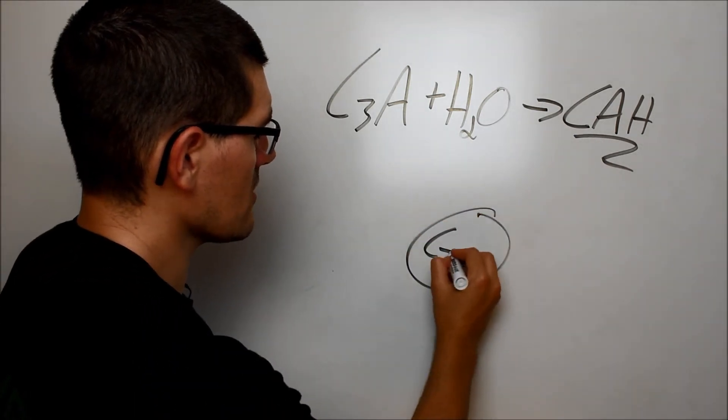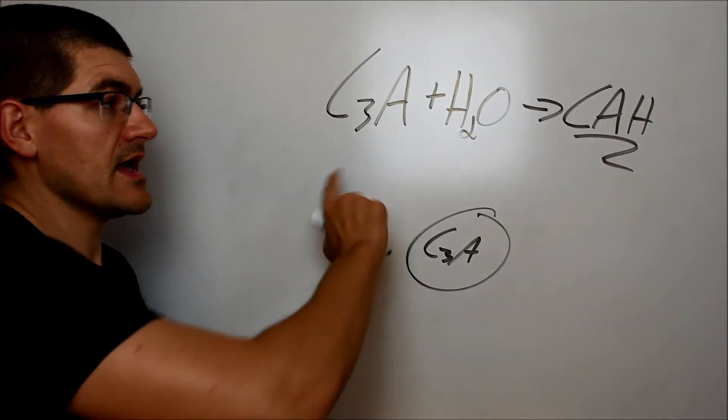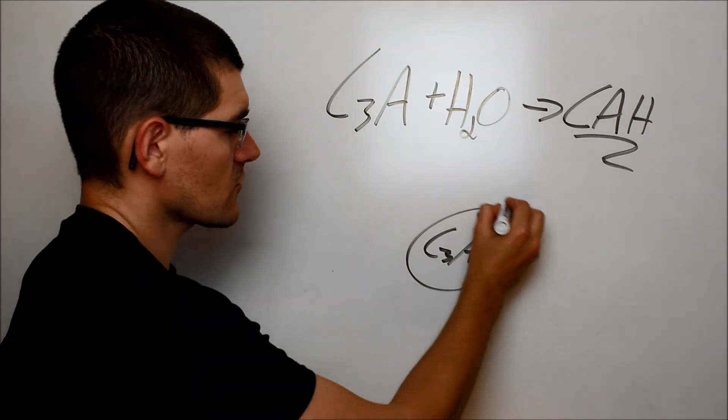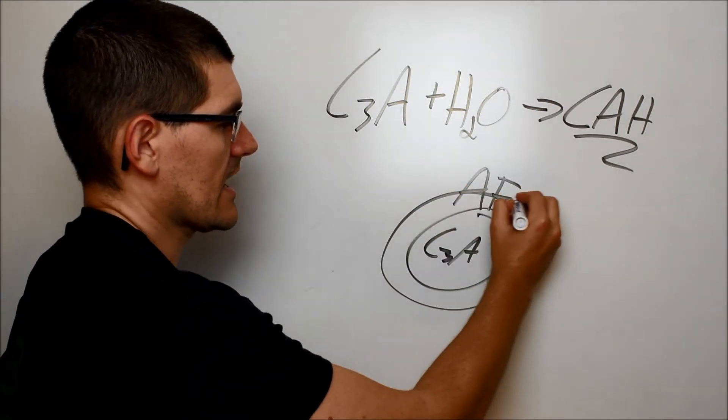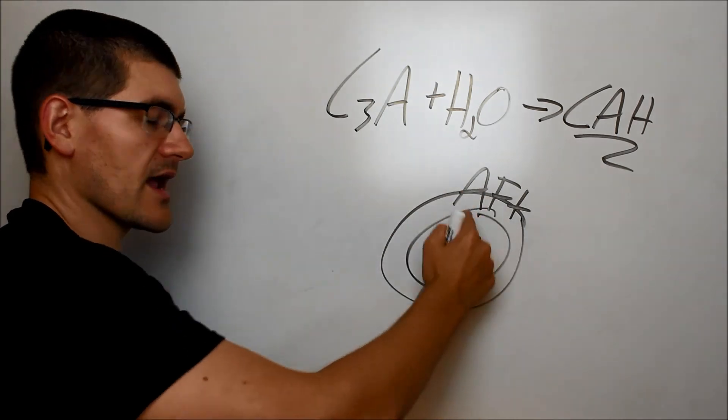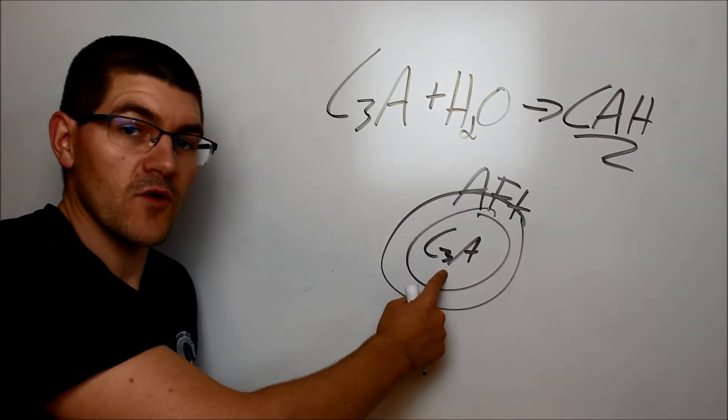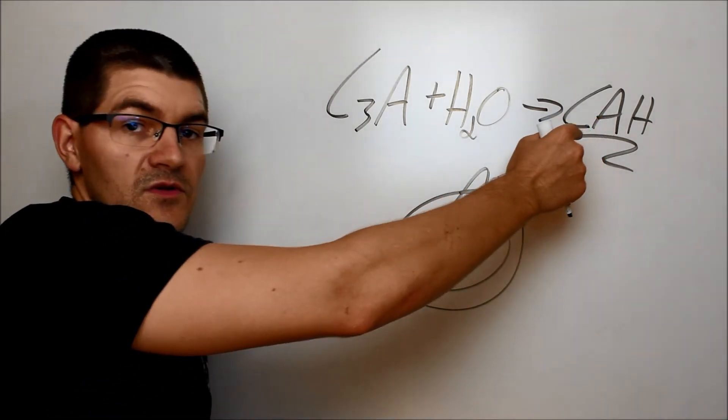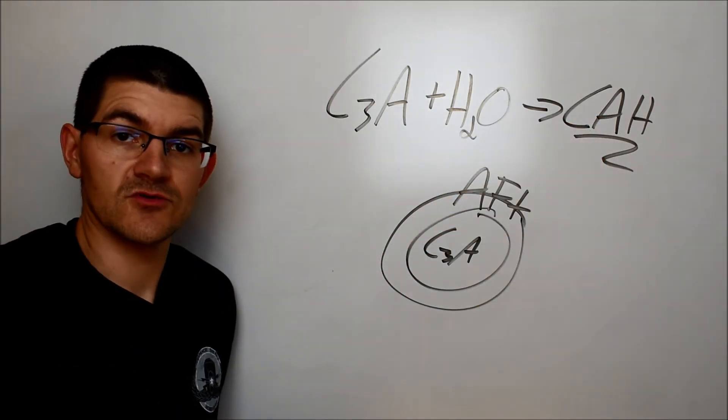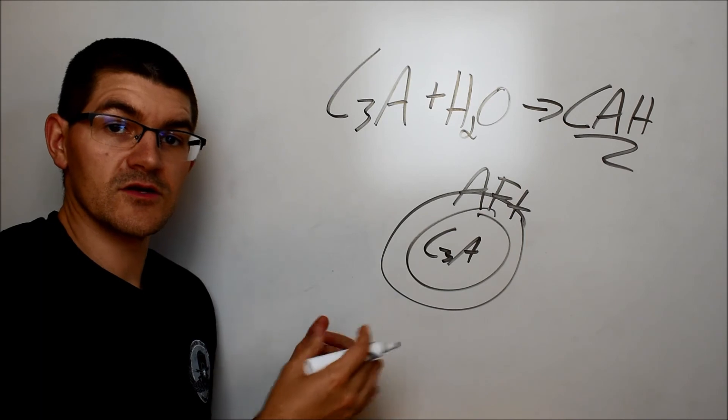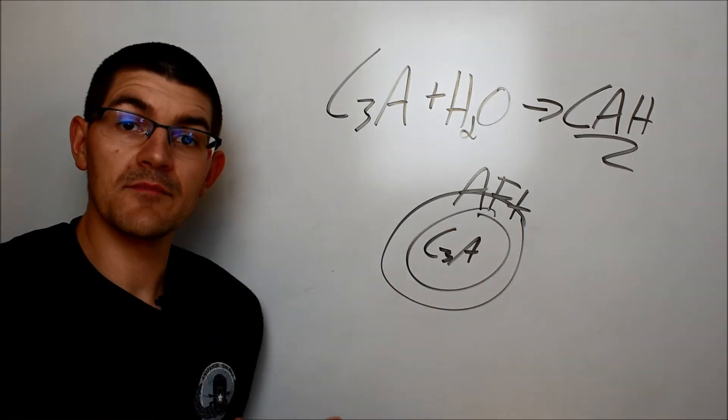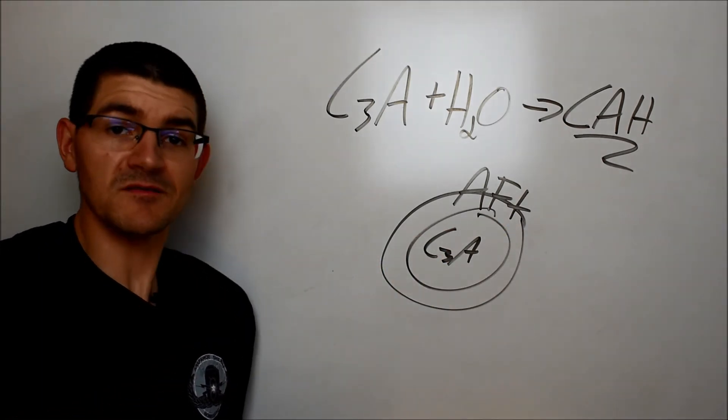In the presence of sulfate, however, that C3A particle, when it reacts with the water, instead of creating CAH, creates a product called etringite, which we'll abbreviate AFT. This etringite on the outside of the C3A particle passivates it and prevents any of the rest of the C3A from reacting with water and going through that CAH reaction. So the sulfate's in there to extend the workable lifetime of the concrete. That's pretty cool, huh?